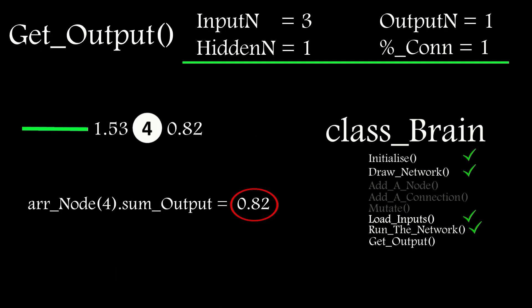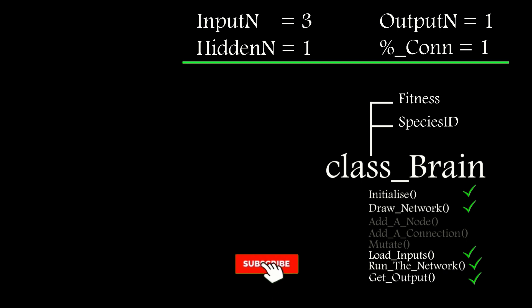In the last video, we looked at the key elements and components of our class, which we'll use to create our population. So the first step in creating the next generation is the speciation process.